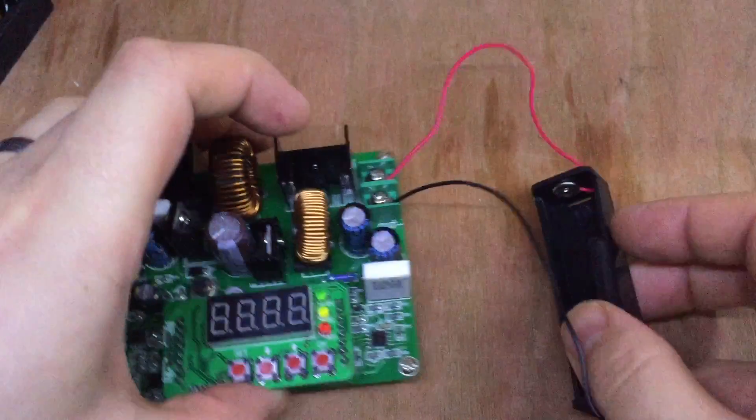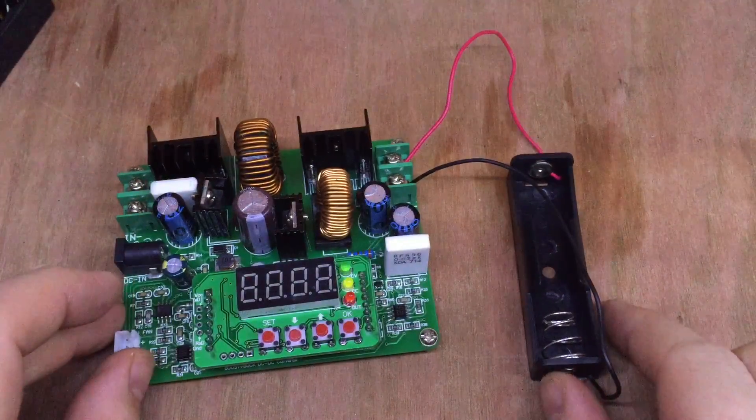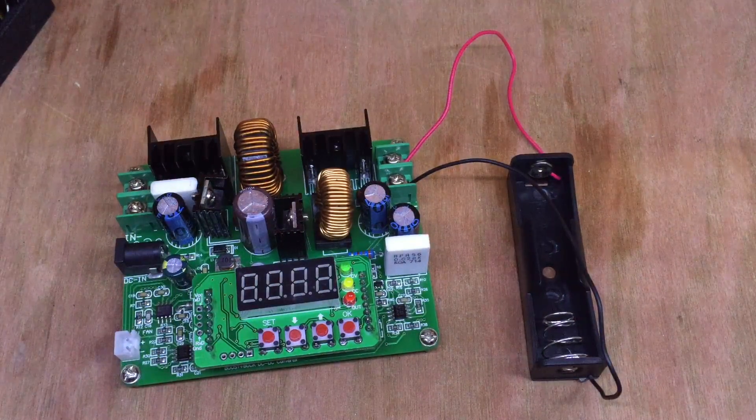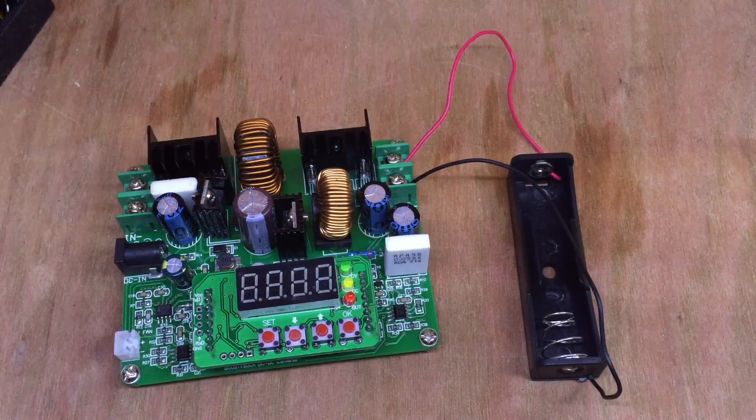But then of course I realized that I bought these 18650s and I was draining them in my torch, and I didn't have anything to charge them with. So I scratched my head and had a little think about it. I realized that my Ming-He DC-to-DC converter could possibly fit the bill.